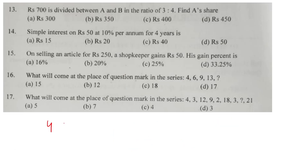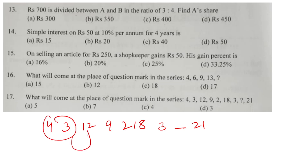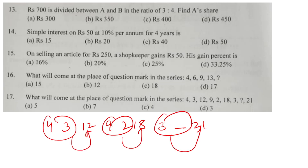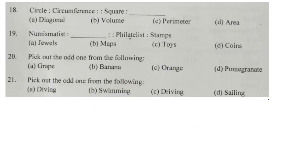Question number 17: 4 and 3 gives 12; 9 and 2 gives 18; 3 and 7 gives 21; so B will be our correct answer. Question number 18: a circle's circumference is the outermost boundary — the perimeter. Option number D is the correct answer.